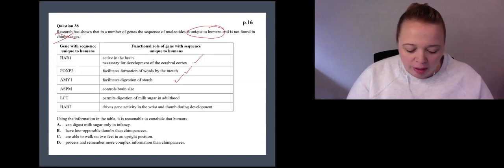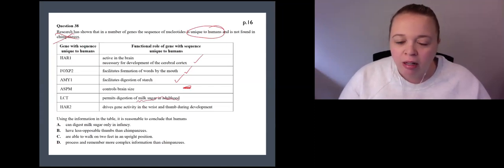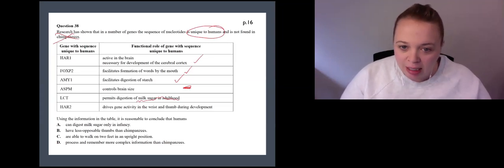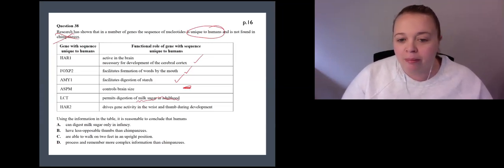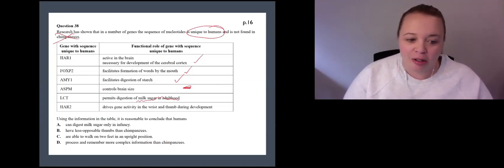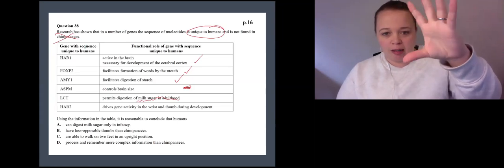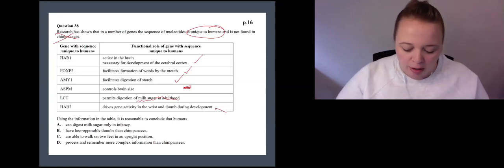There's something about brain size here. We can digest milk sugar in adulthood. So if you give milk to an adult, we can break down the lactose, particularly those with European heritage. We seem to have a better lactase ability. We have this better ability to break down lactose, which is pretty cool. And also there's something that drives activity gene in the wrist and thumb during development. It's what gives us this kind of increased dexterity.